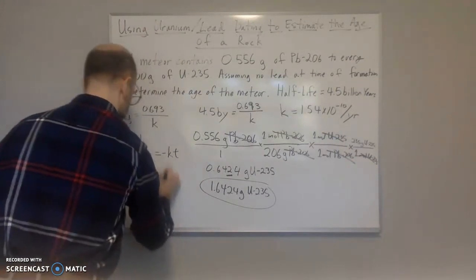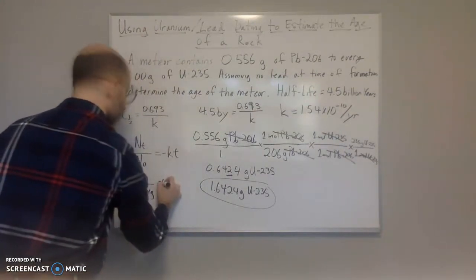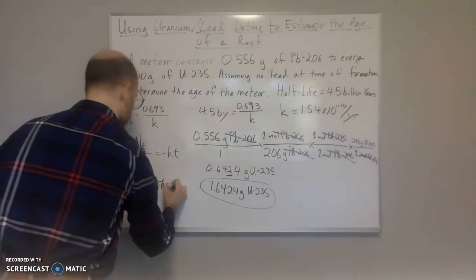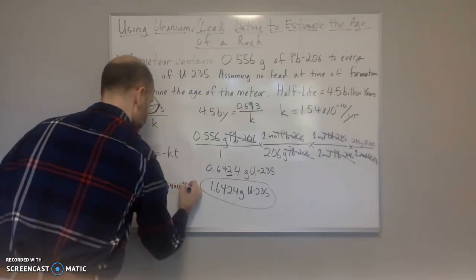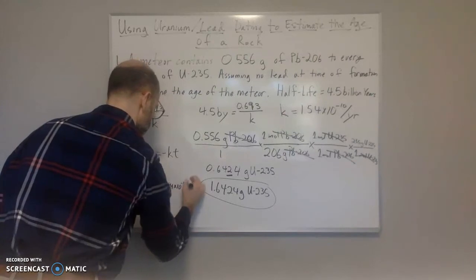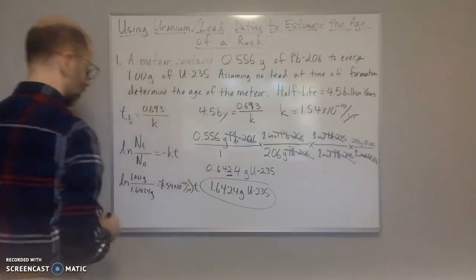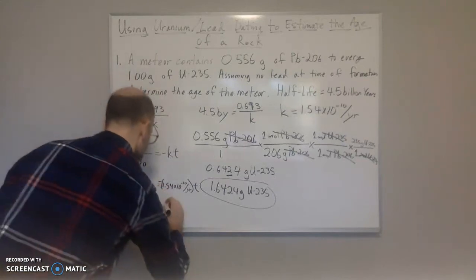So now we can plug everything into this equation. So we have the natural log of the amount at time t, which is 1.00 grams. And the amount at initially is 1.6424 grams. That's equal to negative k. There's our k. Negative k. 1.54 times 10 to the negative 10 per year.